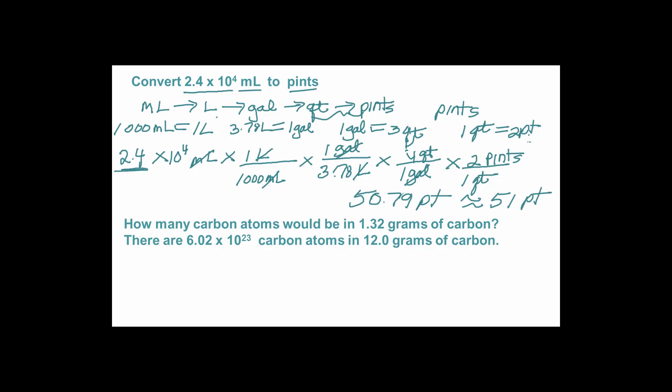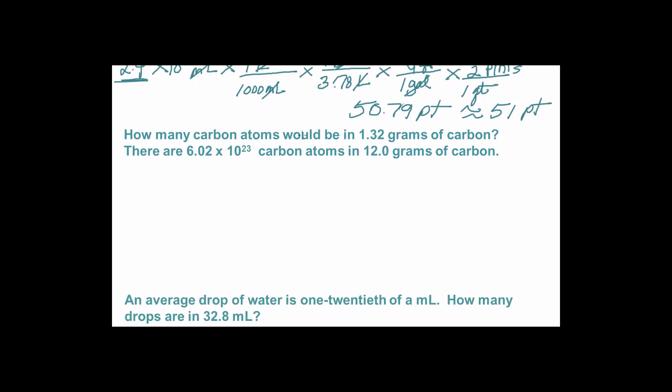Let's go to the next problem. Here we're asked how many carbon atoms are in 1.32 grams of carbon. So our given is grams, and we need to go to atoms. So that's our desired. We're told that there are 6.02 times 10 to the 23rd carbon atoms in 12 grams of carbon. I can use that then as an equivalence. So that's going to allow me to go from grams straight to atoms.